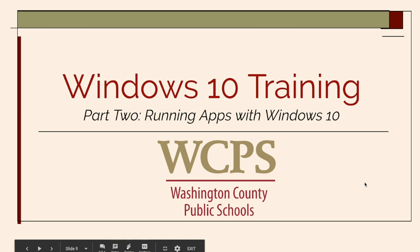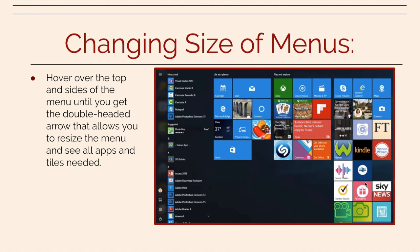In this video, you will learn about running apps with Windows. You can change the size of the menus by hovering over the top and sides of the menu. You'll get a double-sided arrow and you'll be able to change the position and the size of that menu.